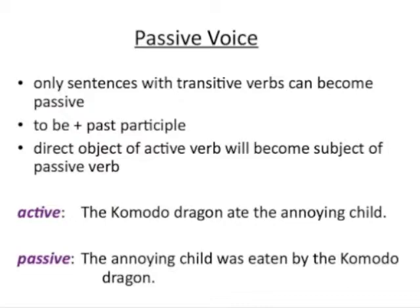The passive voice was our first experience with a grammatical transformation. Remember that only sentences with transitive verbs can become passive. In the five sentence patterns, that means only patterns three, four, and five could ever become passive, because you need a direct object for this to work. Intransitive verbs don't have a direct object.